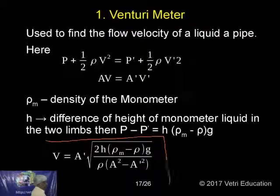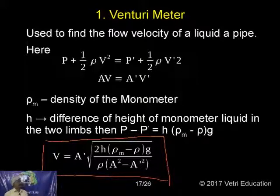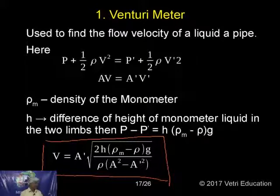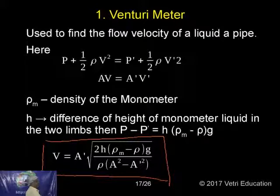Don't forget this formula — you have to keep it in mind. If we go into derivation, we modify this equation to find velocity. The final formula for velocity through the Venturimeter is: root of 2h(rho M minus rho)g divided by rho(A squared minus A_L squared). In the two limbs of the manometer, pressure also varies: P minus P dash equals h(rho M minus rho)g. These go to the other side and come in the numerator. That's the formula to keep in mind.